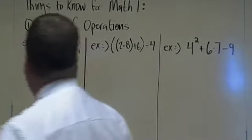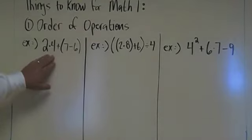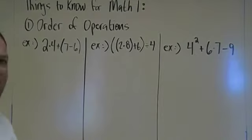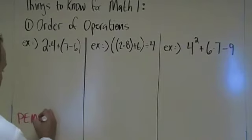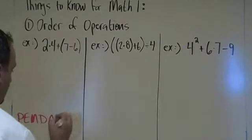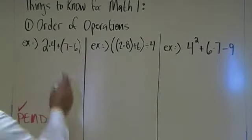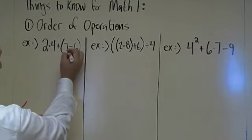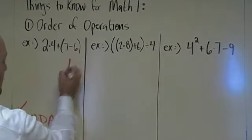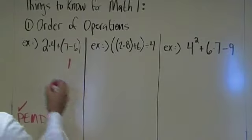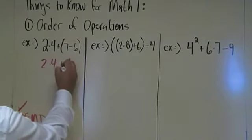The first example we have here states that we have 2 times 4 plus parentheses 7 minus 6. I'm using really simple numbers here for you. Please excuse my dear Aunt Sally, so that's what we're going to put down here. The P, we need to check off each one as we go. We need to take care of all parentheses. Here's our parentheses set in here, we need to do this first. So I'm actually going to subtract 7 minus 6 and get 1. I'm going to bring everything else down, 2 times 4 plus 1.